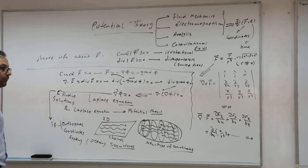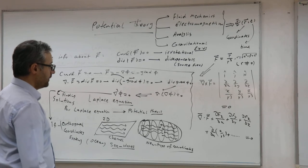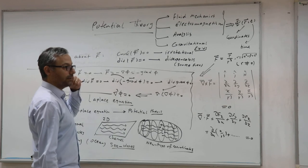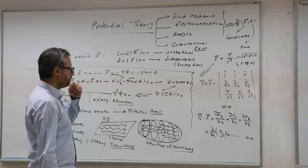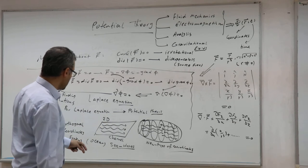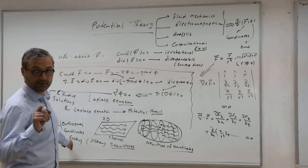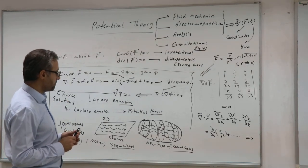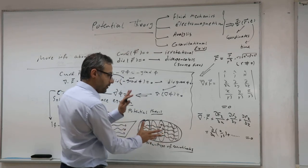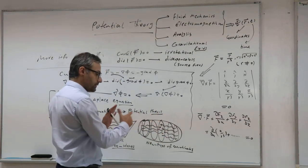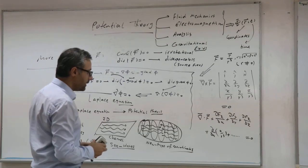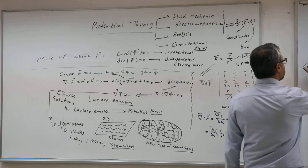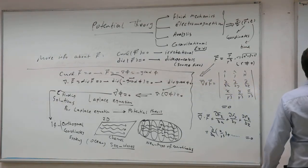Choosing the best coordinate system is a big problem. It has been shown that this equation can be solved in 14 orthogonal coordinate systems. This will be one of our next lectures, after I explain how to solve this equation and you learn the technique of Green's functions and integration representations. We will then find the appropriate coordinate systems. Choosing the coordinate system is one of our main tasks.